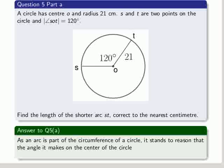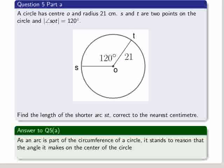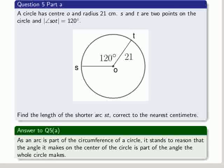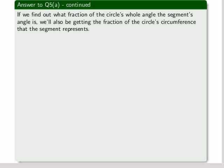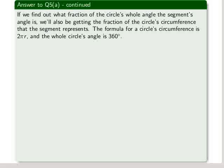it stands to reason that the angle it makes on the centre of the circle is part of the angle the whole circle makes. If we find out what fraction of the circle's whole angle the segment's angle is, we'll also be getting the fraction of the circle's circumference that the segment represents. The formula for a circle's circumference is 2πr, and the whole circle's angle is 360 degrees.